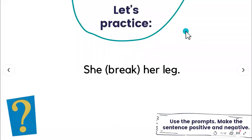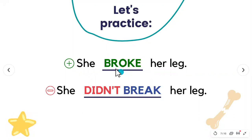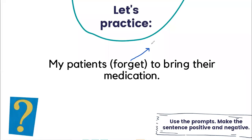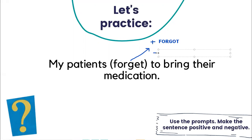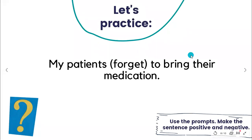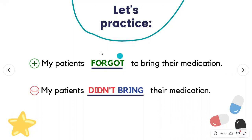Let's see one more example: 'My patients forget to bring their medication.' ¿Cuál es el pasado de 'forget'? Es un verbo irregular, entonces si busco en mi lista me voy a dar cuenta que es 'forgot'. My patients forgot to bring their medication. ¿Y cuál sería la forma negativa? My patients didn't forget to bring their medication. Acá recuerden, el verbo no cambia, solo agrego didn't. No agrego ED ni nada de eso porque es un verbo irregular, solo veo la lista.